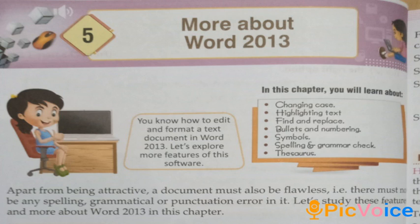Apart from being attractive, a document must also be flawless. There must not be any spelling, grammatical, or punctuation error in it. In Word 2013, we can make the text attractive and correct — spelling, grammatical, and punctuation errors can be avoided and corrected.